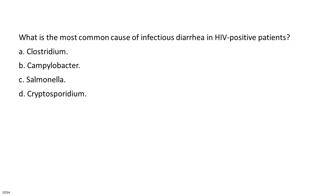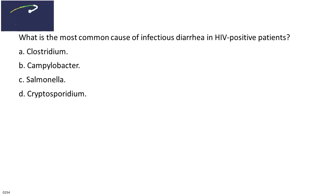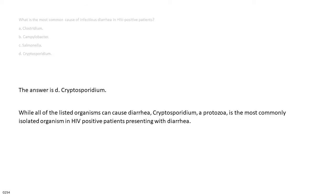What is the most common cause of infectious diarrhea in HIV-positive patients? A. Clostridium. B. Campylobacter. C. Salmonella. D. Cryptosporidium. The answer is D. Cryptosporidium. While all of the listed organisms can cause diarrhea, Cryptosporidium, a protozoa, is the most commonly isolated organism in HIV-positive patients presenting with diarrhea.